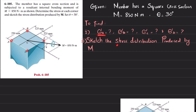Let's start with the solution. The first step is that this moment is not about the y-axis or z-axis — it's making an angle of theta with the y-axis. So it will have two components: one about the y-axis, represented as My, and My equals M·cos of 30 degrees, and Mz equals M·sin of 30 degrees.